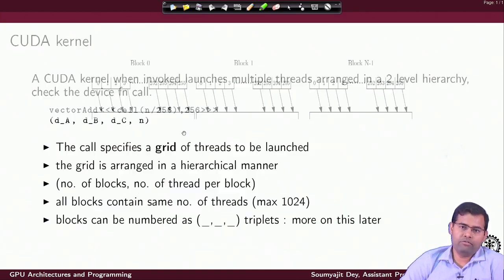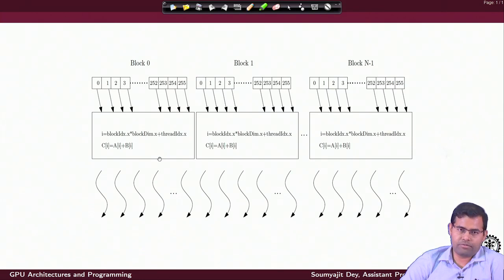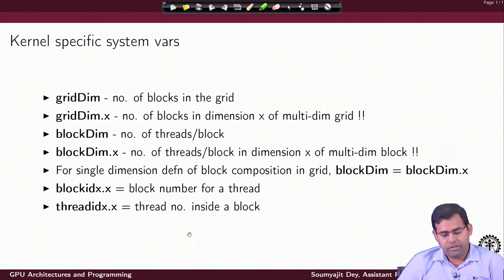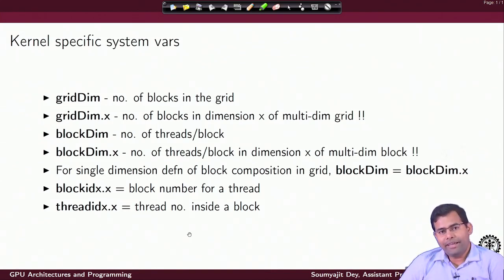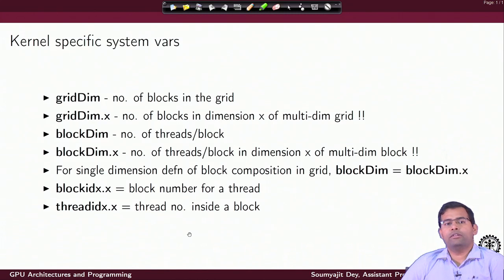By default, if I use a single value instead of a triplet for thread or block IDs, I can access them using blockIdx.x and threadIdx.x. For a single dimension, blockIdx.x gives the block number for a given thread and threadIdx.x gives the thread number inside a block. Every thread has its own values for these variables, and together with blockDim, they can be used to compute the global thread ID.